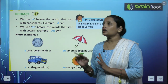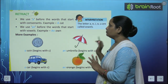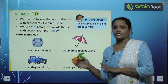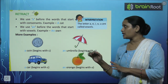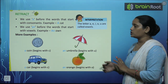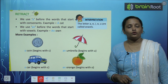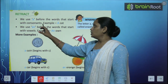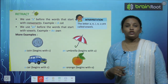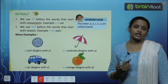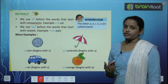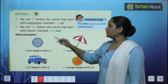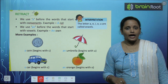We use A before the words that start with consonants. हम A उन words के साथ लगाते हैं जो consonant के साथ शुरू होते हैं — उन naming words के साथ जो consonant से शुरू होते हैं. For example, A cat.